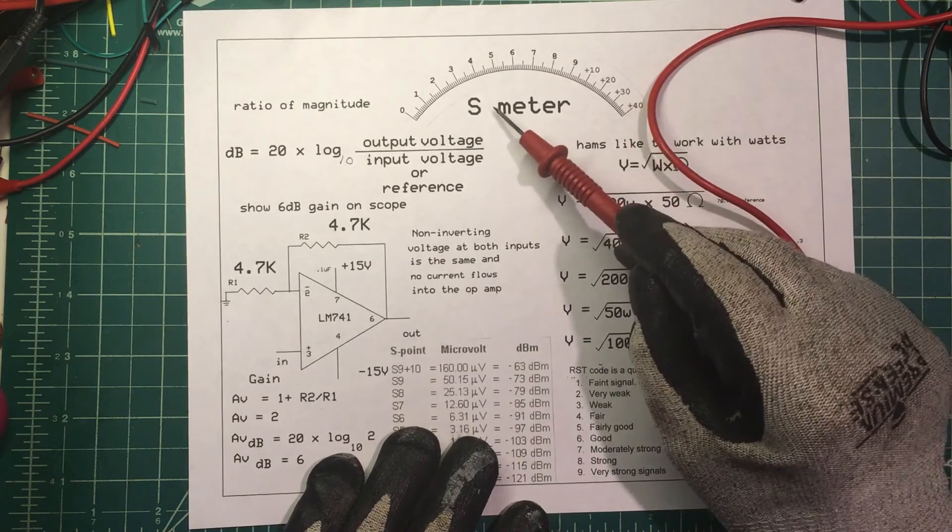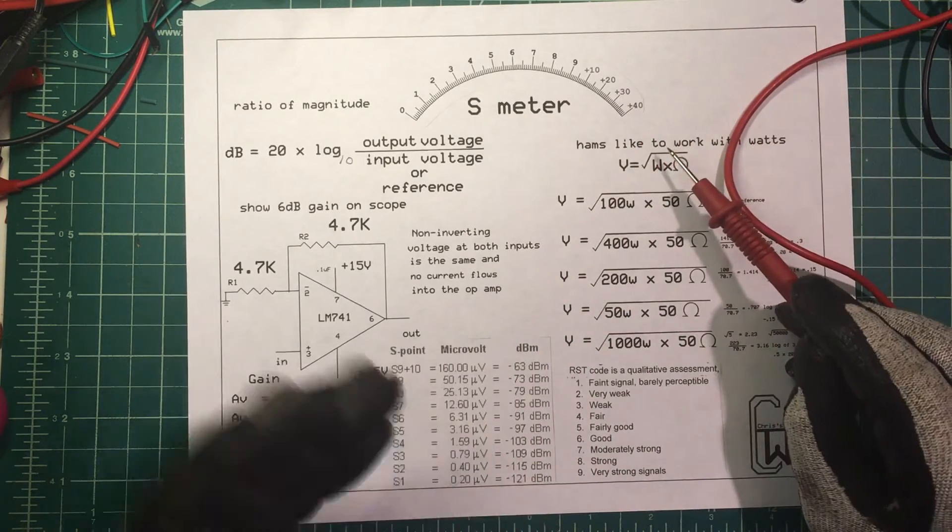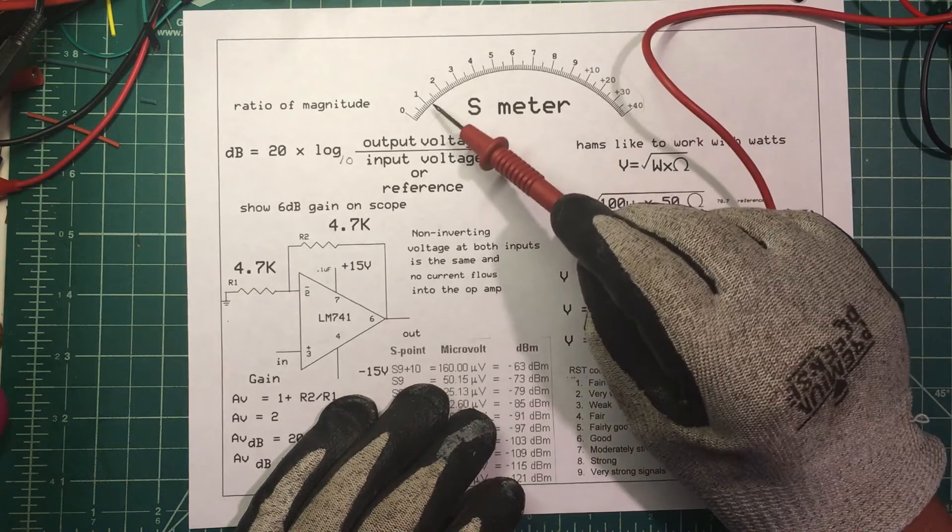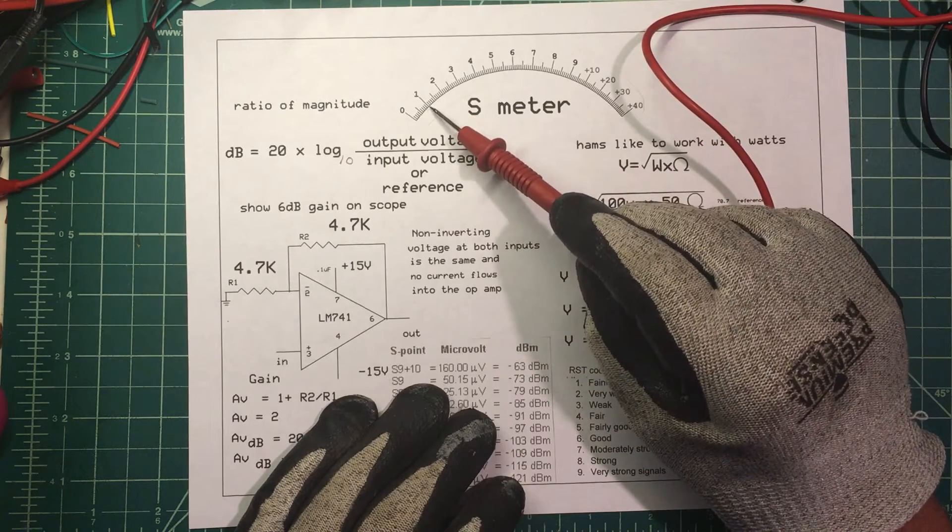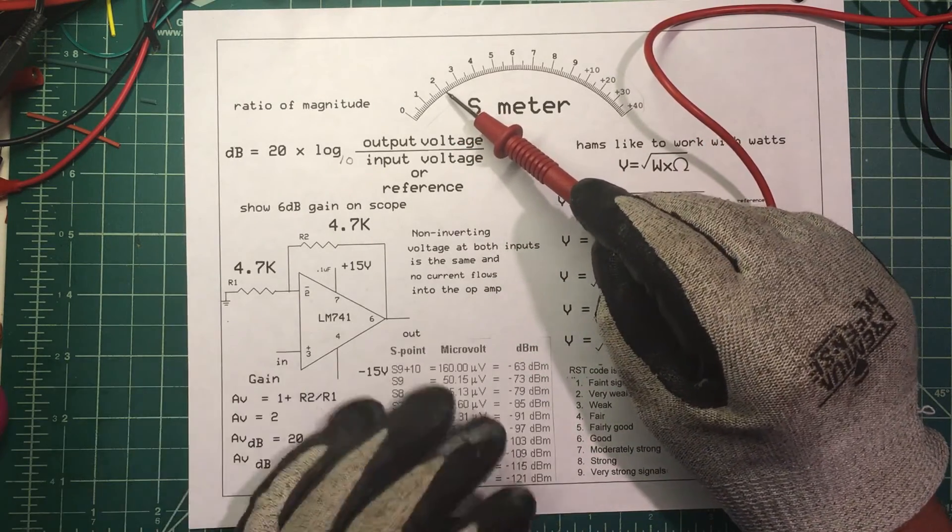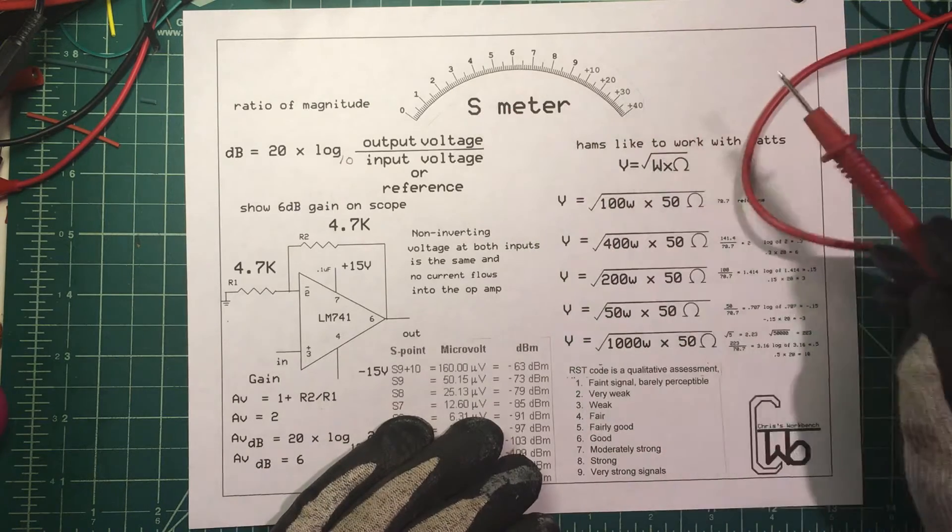Now the S meter is scaled from 1 to 9, and each division is 6 dB. So if you go from an S1 to an S2, you're up 6 dB. S2 to S3, you're up 6 dB.